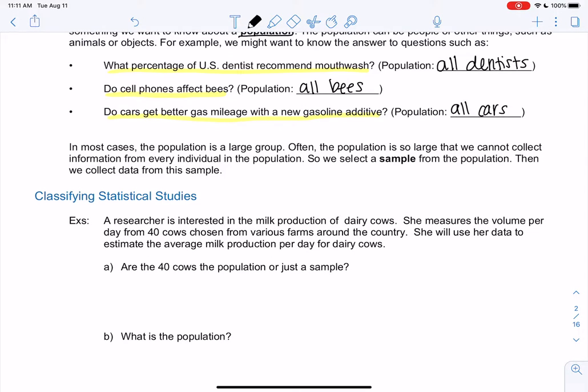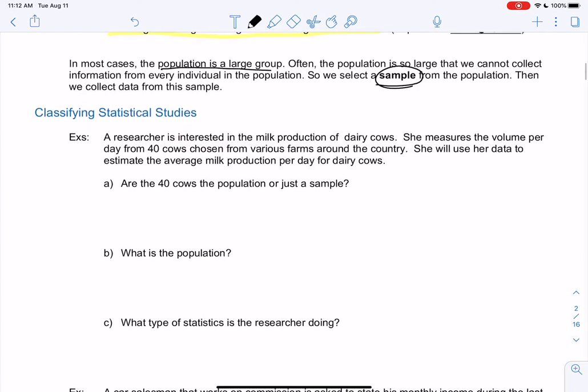So most of the time these populations are very large groups, as we saw above. And so it's very large that we cannot collect data from every individual. And so that's why we'll collect samples.